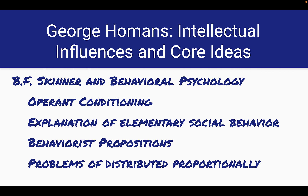This leads to the problem of distributive justice. To strike a fair balance between rewards and costs, each party in the exchange must perceive they are not paying too high a cost relative to the rewards they're gaining. The more often an activity has been rewarded, the more anger an individual will display when the same activity done under similar situations is not given a reward. Distributive justice ensures that profits are distributed proportionally. When a balance of expected profits is achieved, distributive justice exists. When either party judges profits to be unjust, anger or feelings of guilt will follow.